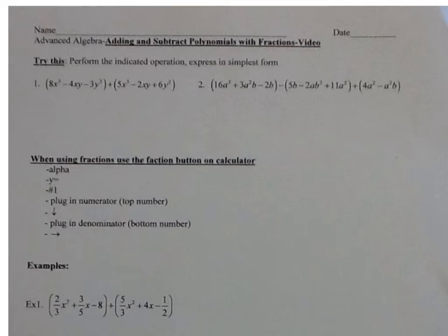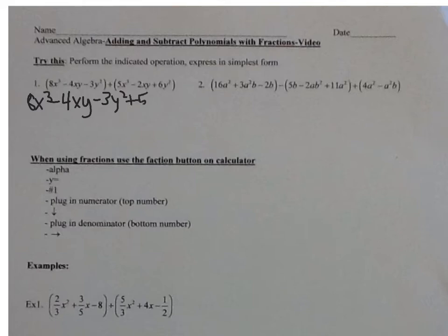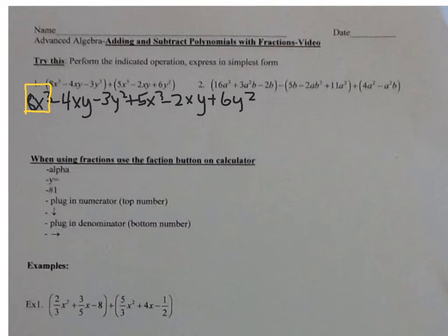For the first one, we're adding, so I'm just going to rewrite this expression and get rid of the parentheses. So I have 8x to the third minus 4xy minus 3y squared plus 5x to the third minus 2xy plus 6y squared. Let's look for our like terms. I have 8x to the third; I'm looking for another x to the third — I see one right here, that's positive 5x to the third. So I have positive 8 plus 5, that is 13. So that's 13x to the third.